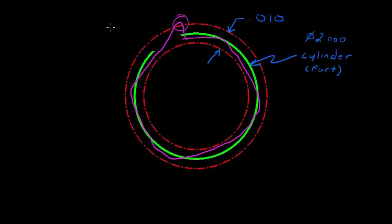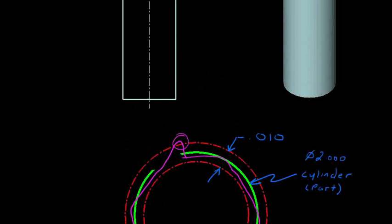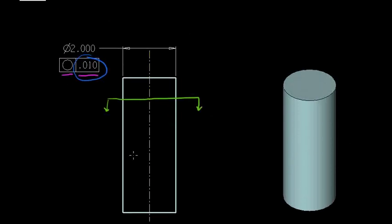So, just to conceptualize the idea of roundness, it is similar to straightness, but we define it as a circular tolerance zone. Now, that roundness tolerance would apply along the entire length of this cylinder. So, we would cut a section here, here, anywhere along the length of this cylinder.